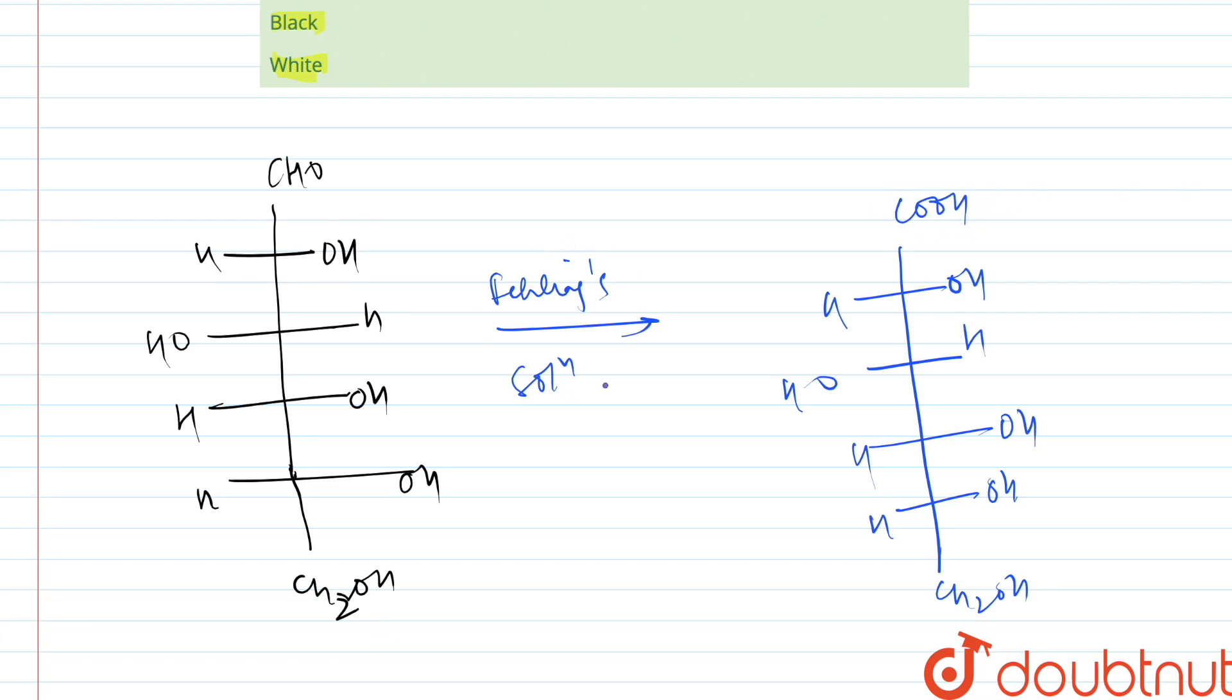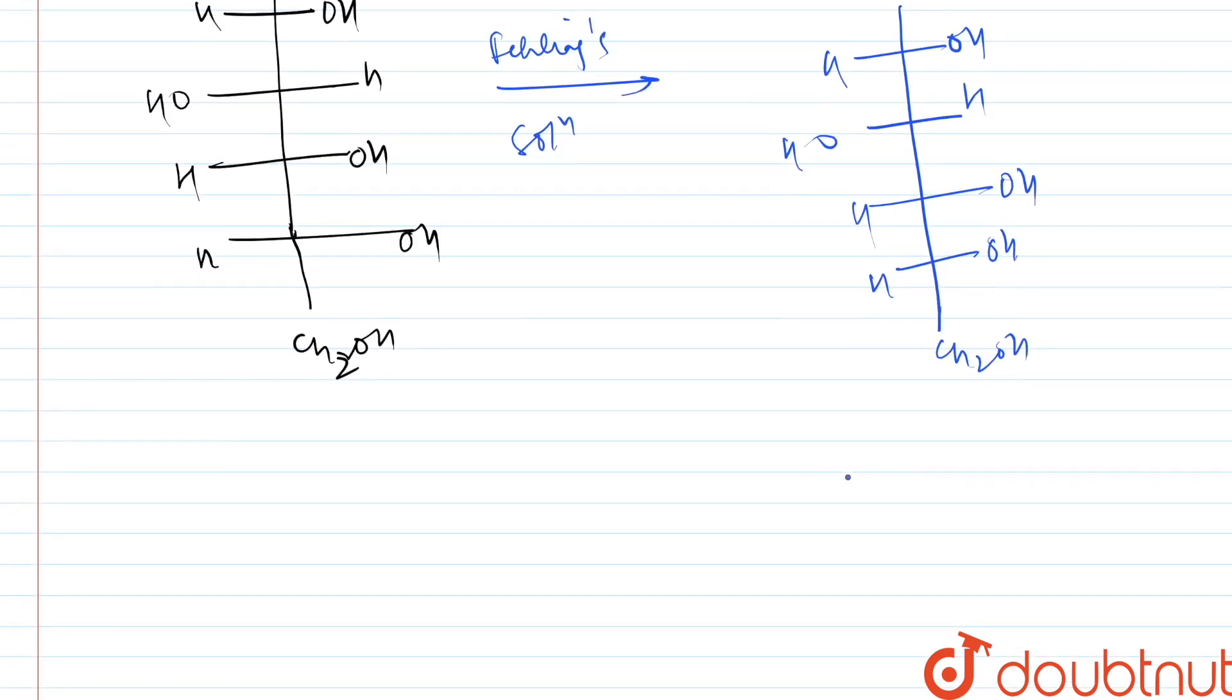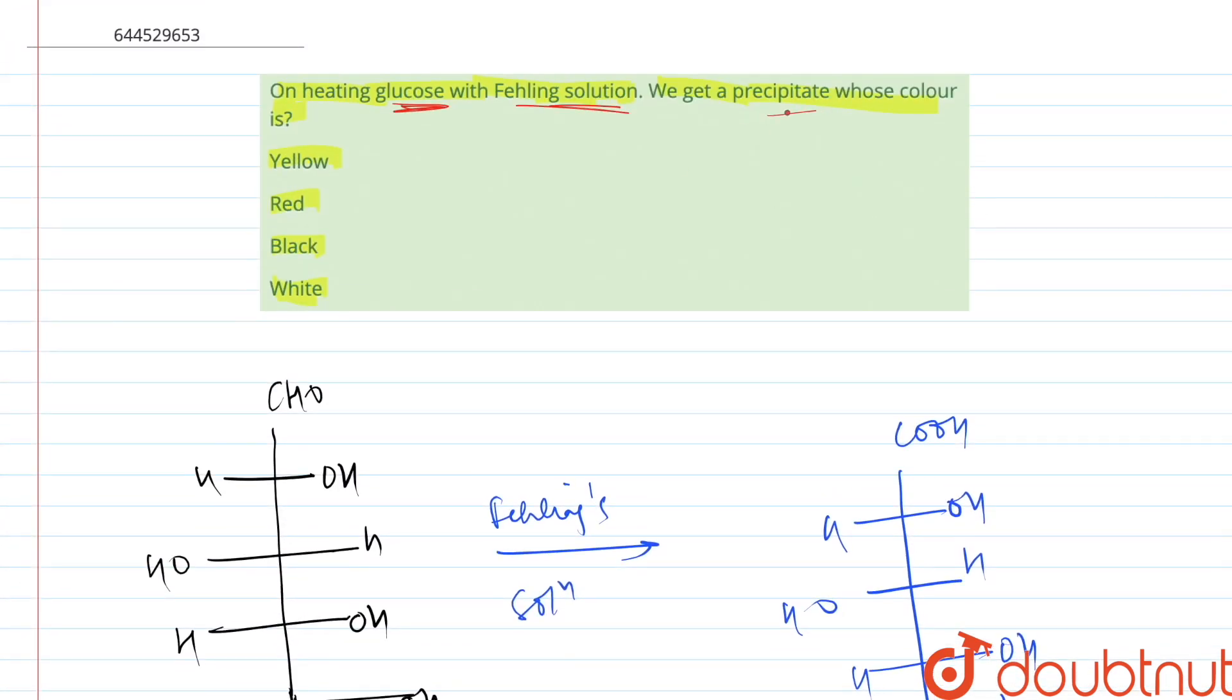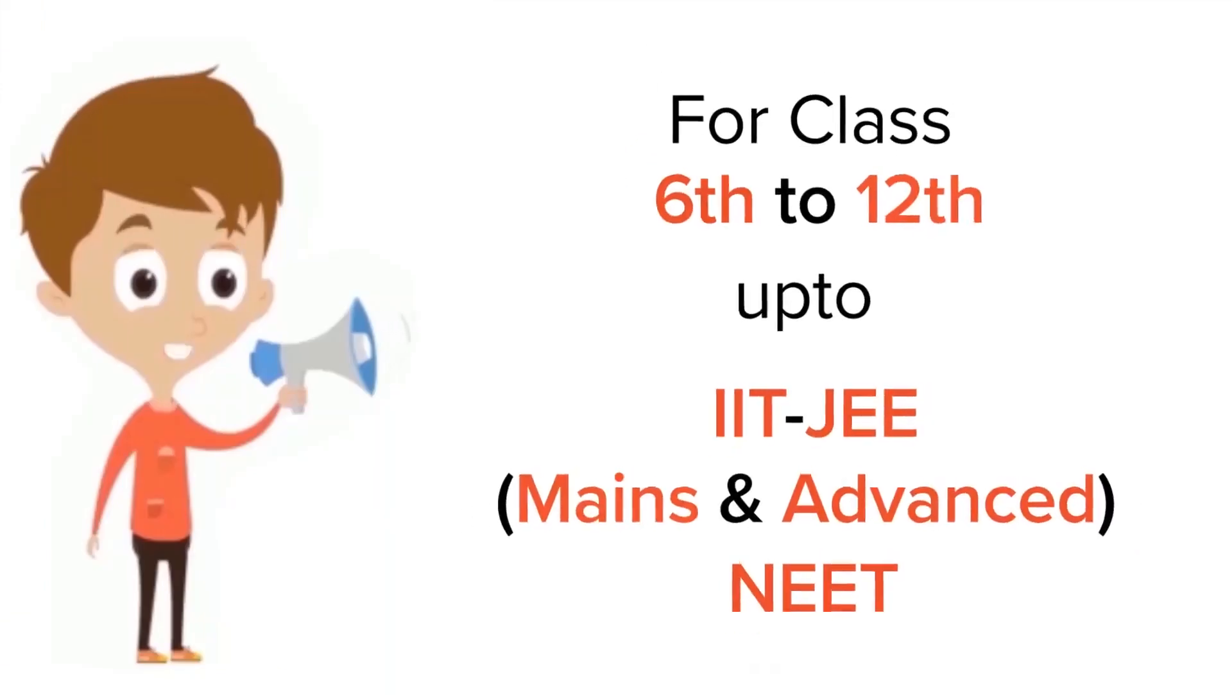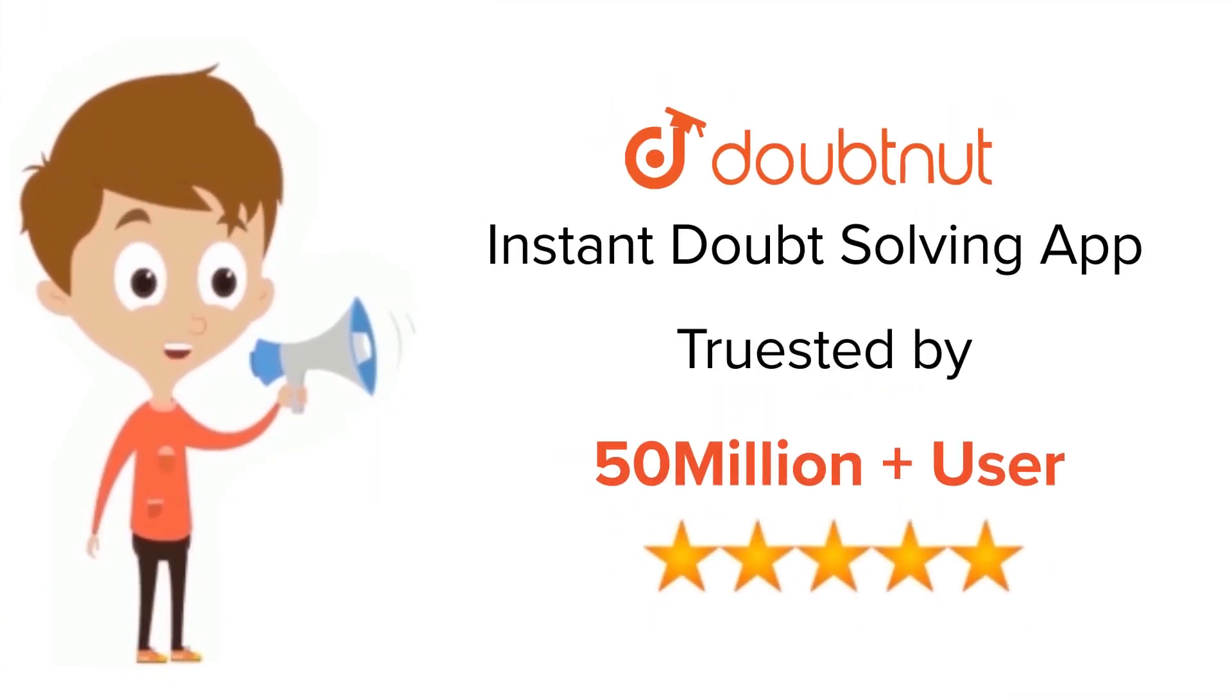Because Fehling solution oxidizes this, and here we get an extra product of Cu2O, and the color of this compound is red which is insoluble. So therefore we can say when the Fehling solution is passed through glucose we get red color. For class 6 to 12, IIT JEE and NEET level, trusted by more than 5 crore students, download Doubtnet app today.